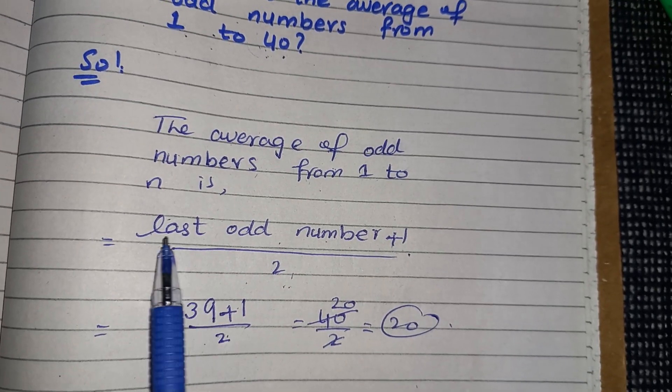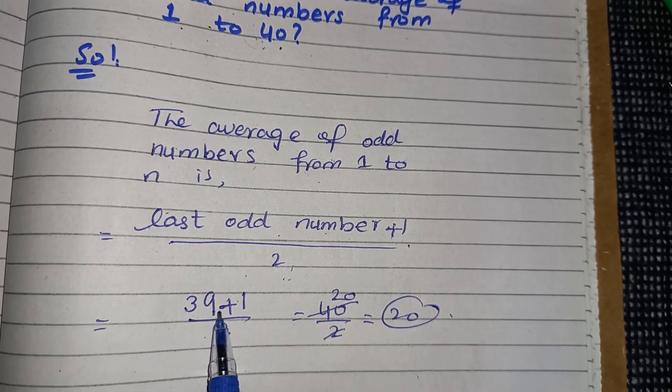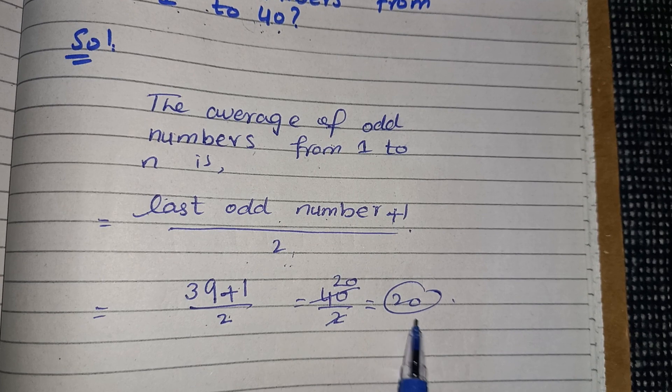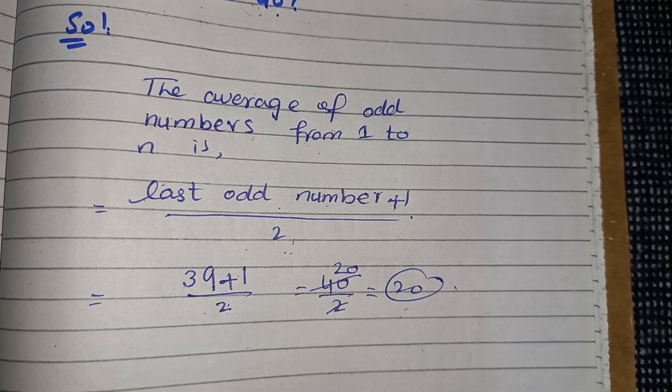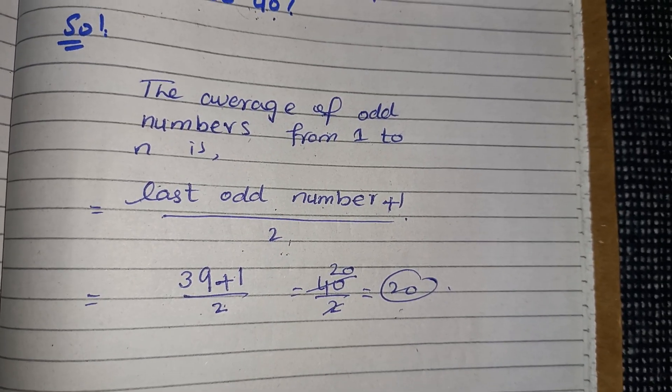So I have written here 39 - that is the last odd number - plus 1, divided by 2, and after simplification I get 20, and this is your desired result. Thank you so much.